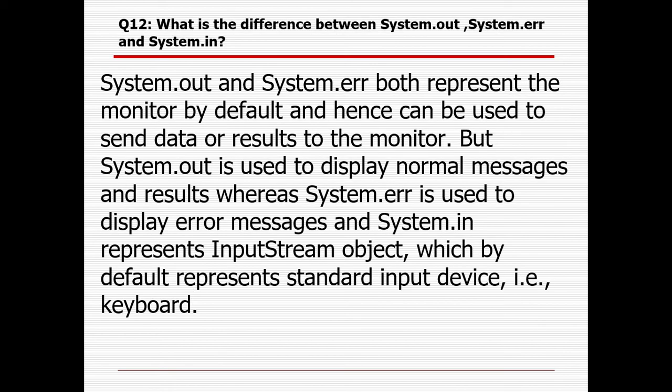What is the difference between System.out, System.error, and System.in? System.out and System.error both represent the monitor by default and can be used to send data or results to the monitor. System.out is used to display normal messages, whereas System.error is used to display error messages. System.in represents the input stream object, which by default represents the standard input device — the keyboard. Through System.in, we can use the Scanner class to pass data.